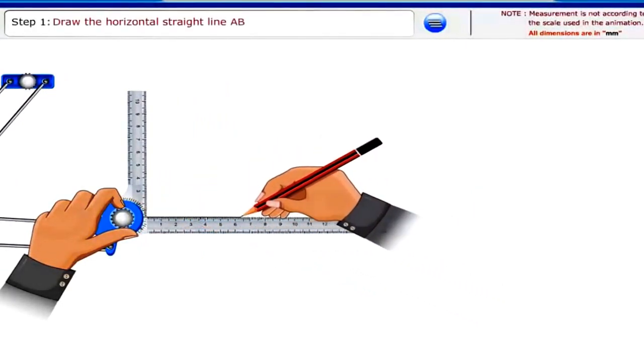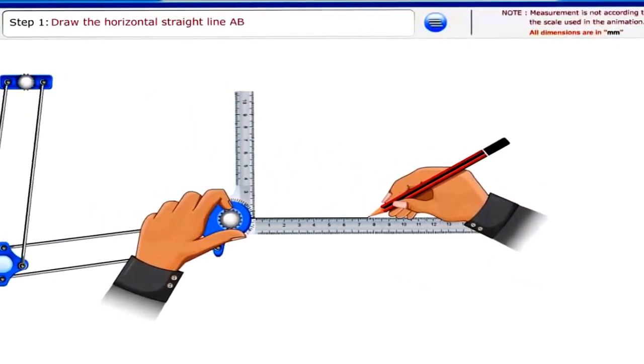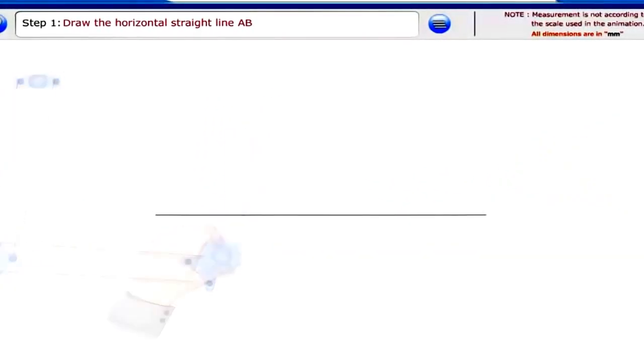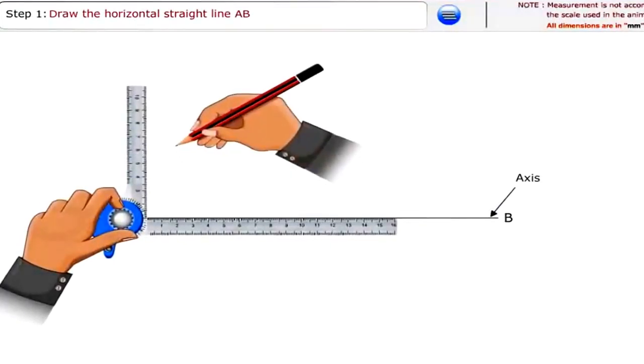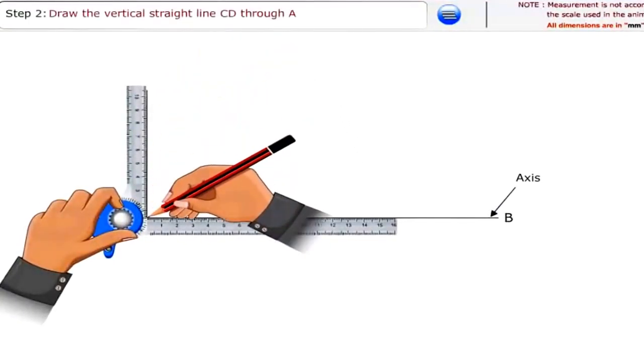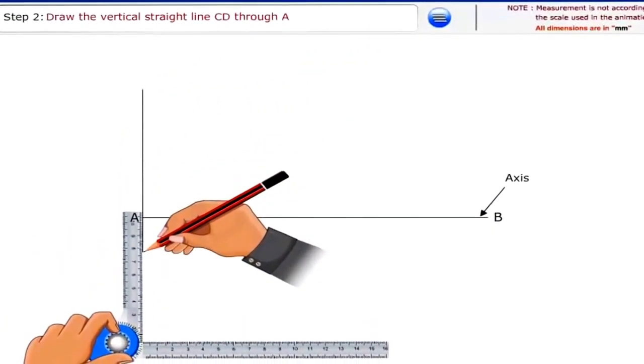Draw the horizontal straight line A B. Draw the vertical straight line C D through A.